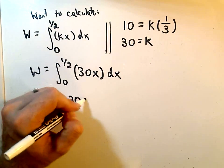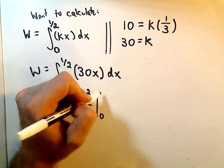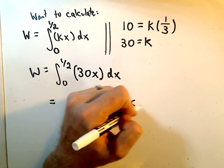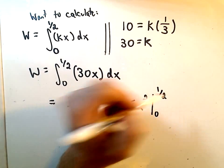So, if we integrate, we'll get 30 x squared, divide by 2, from 0 to 1 half. Well, 30 over 2 is simply 15 x squared, from 0 to 1 half.